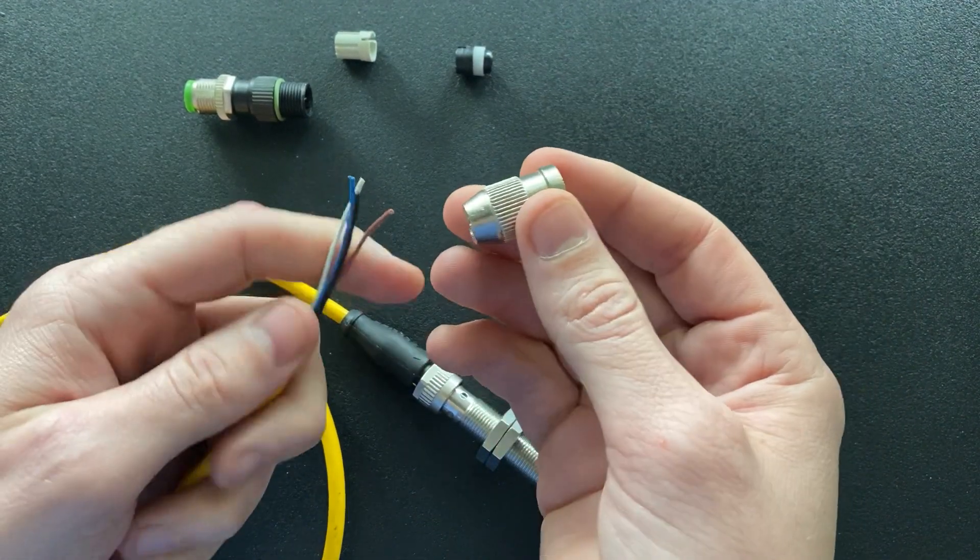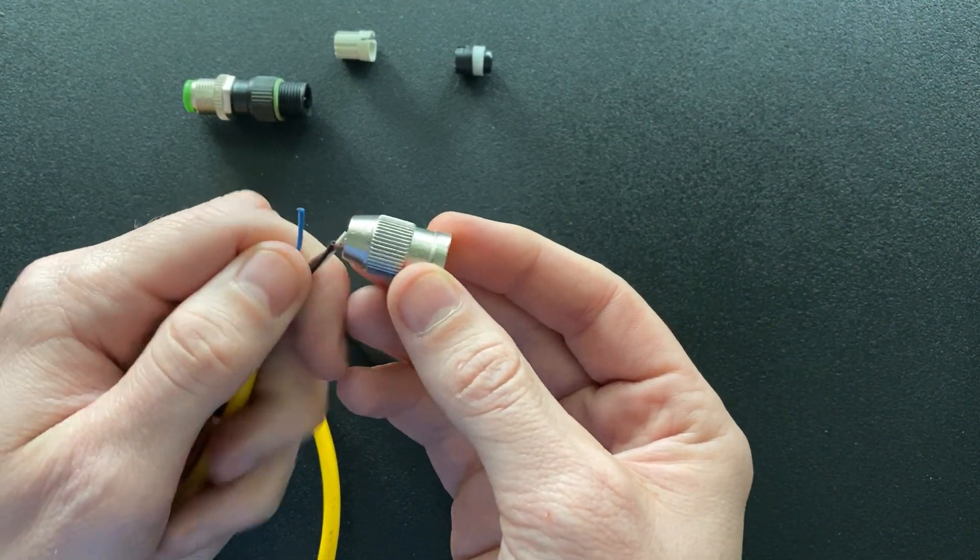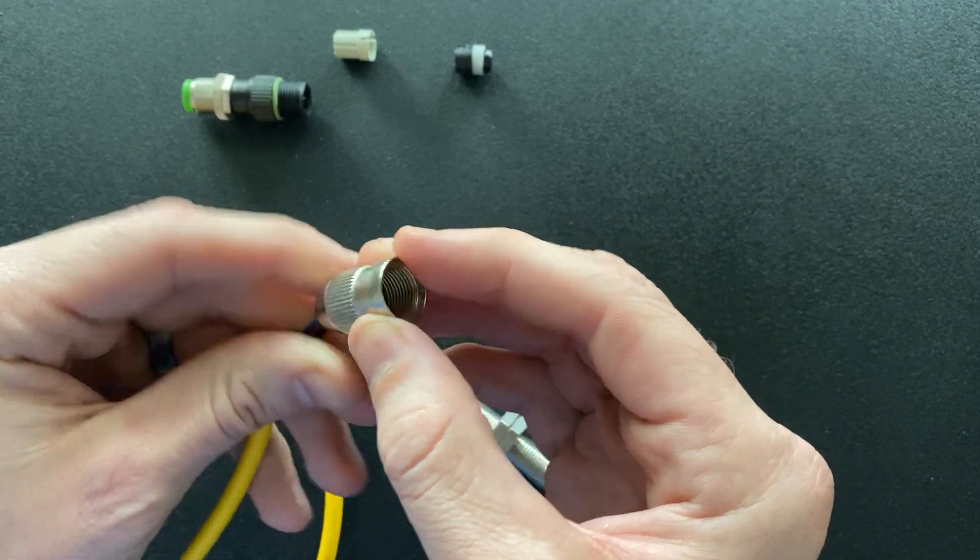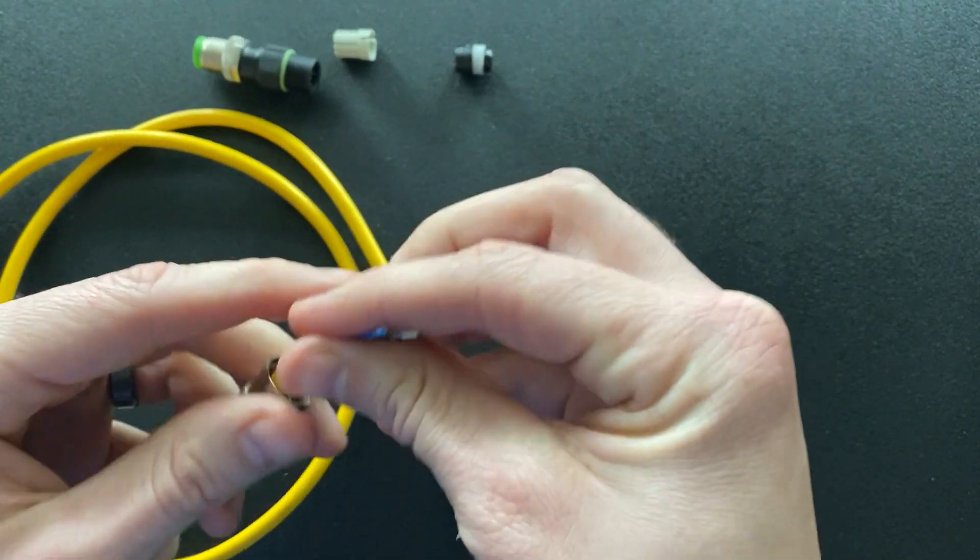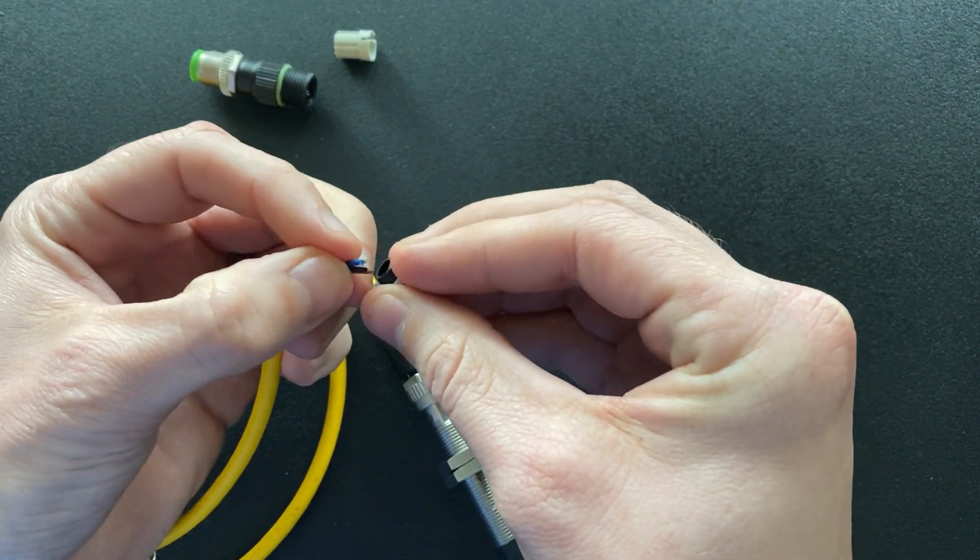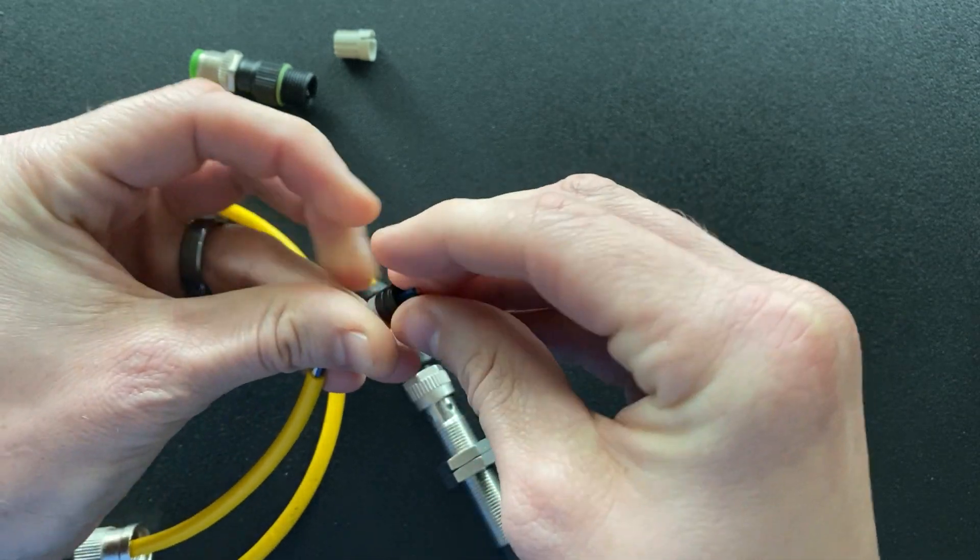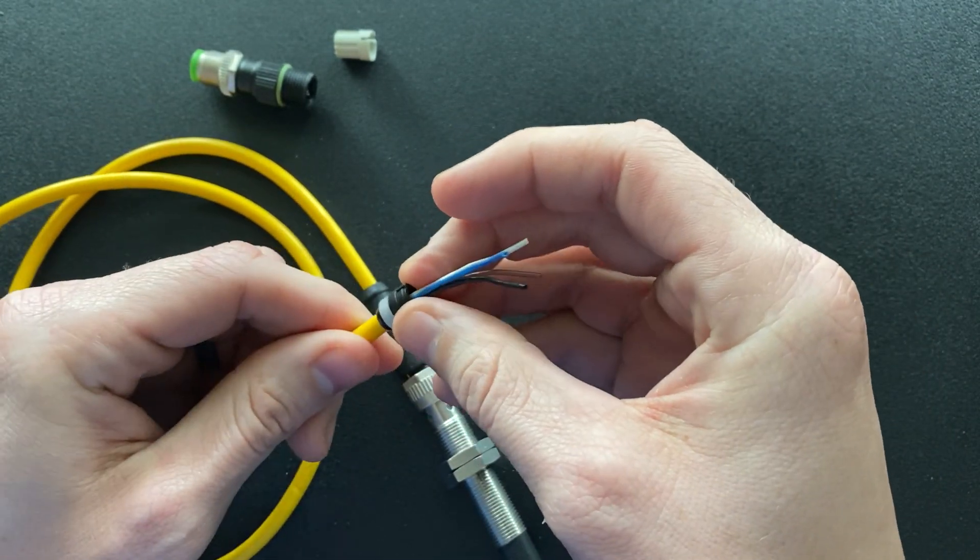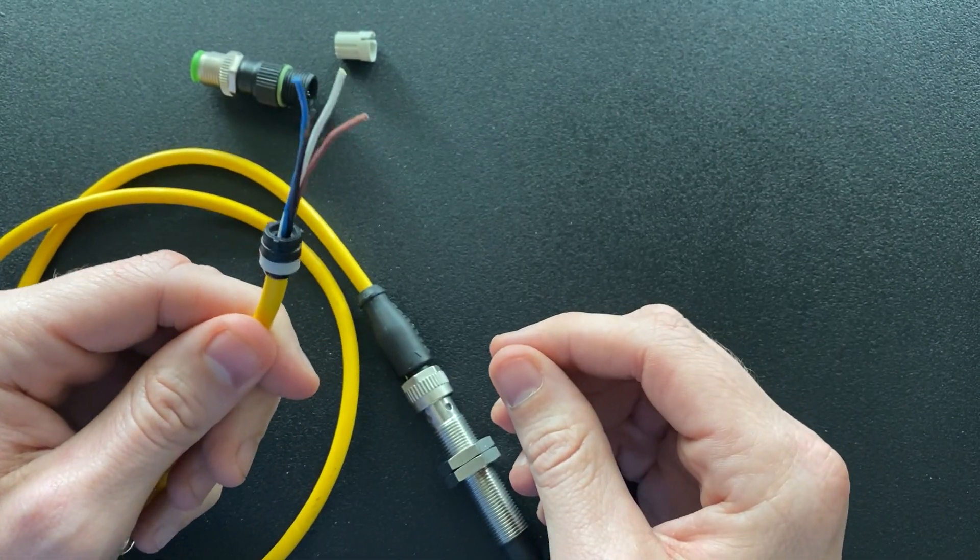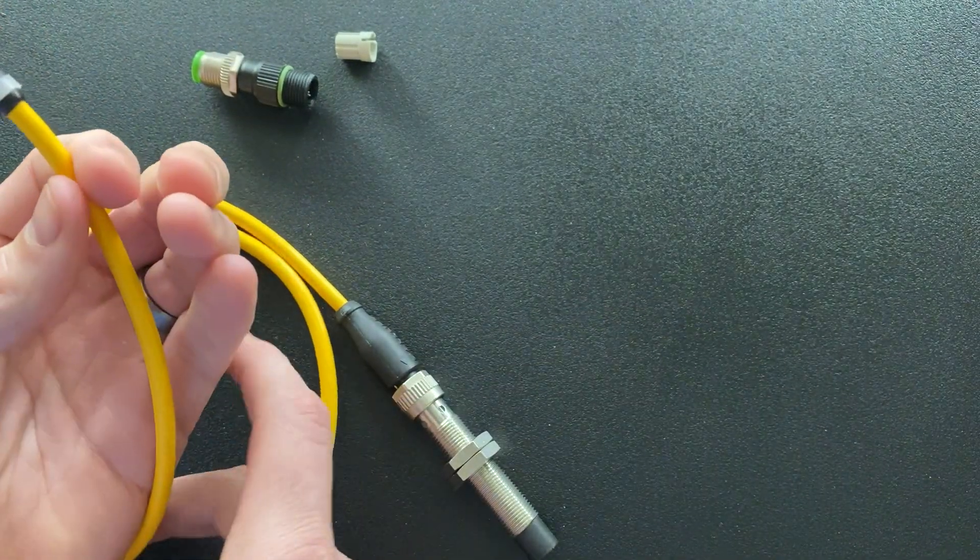The first thing you do is take the sealing nut and slide it over the cable. Then you're going to take your strain relief and slide that over as well. It's designed to sit right on top of the cable jacket here, just like that.